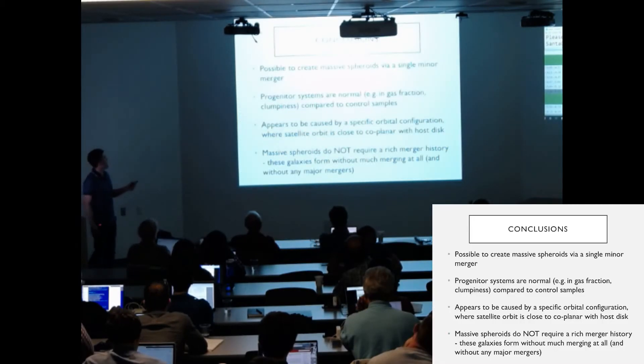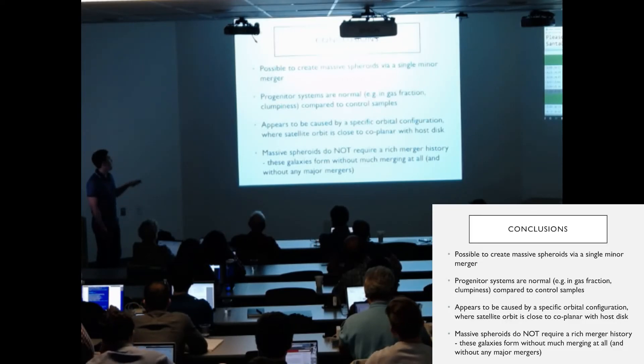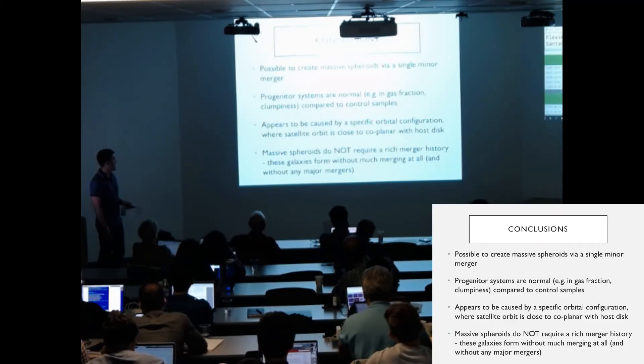So in conclusion, it's possible to create massive spheroids via a single minor merger. The progenitor systems are generally normal in gas fraction and clumpiness compared to the control samples. It appears to be caused by a specific orbital configuration where satellite orbit is close to co-planar with the host disk. Massive spheroids do not require a rich merger history. These galaxies form without much merging at all and definitely without major mergers. Thanks for listening.